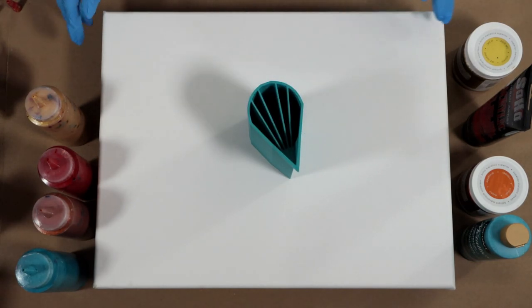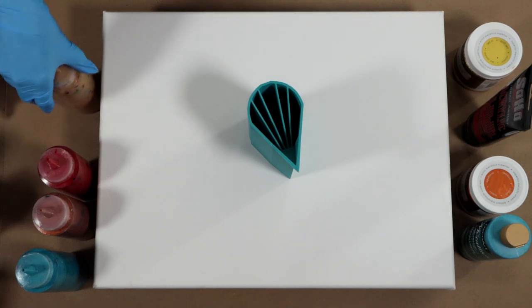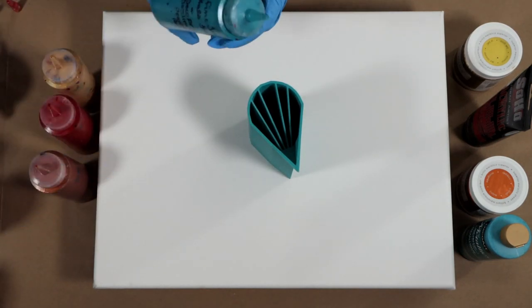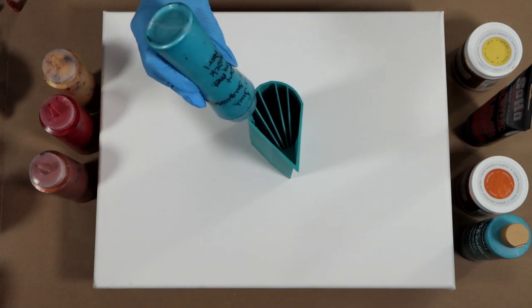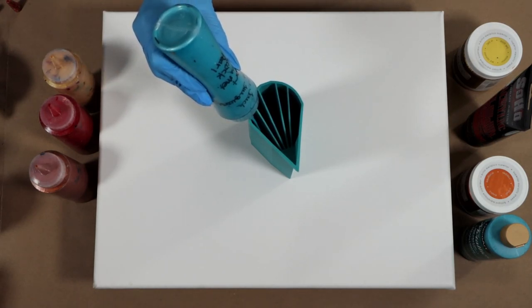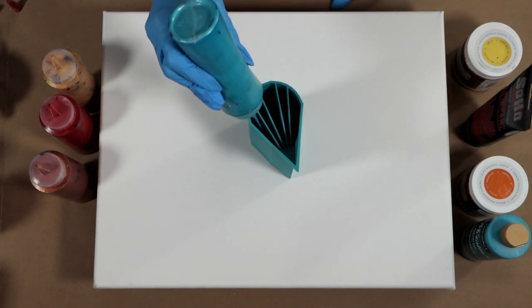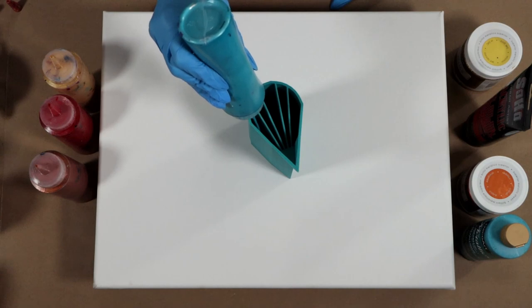I'm just jumping in and getting started here. I'm going to start with the outside chamber and I'm filling it like I said with the Peacock Pearl. It's a metallic and it's super super pretty.